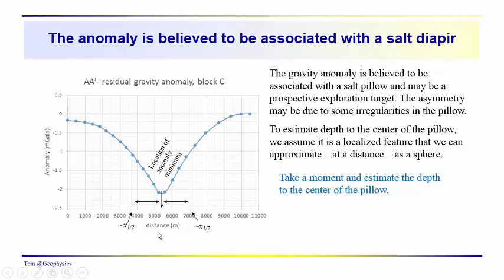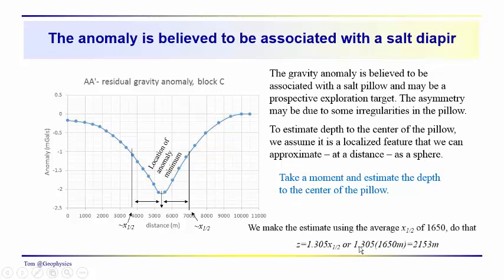So we have these two values of X1.5. So we'll just put some geological background into this. So let's assume that this is a salt pillow or a salt pillar, and it may be a perspective exploration target. The asymmetry may be due to some irregularities in the pillow or the pillar or the diapir. And we want to estimate the depth to the center of the diapir, let's say, or the pillow. And so you might take a moment to just kind of recall how we do that. We use the depth index multiplier, which in the case of X1.5, you might look through your notes. And the depth index multiplier for the X1.5 position is 1.305 times our average. This would be the average X1.5 of 1650. That gives us a depth to the center of this object of about 2153 meters.